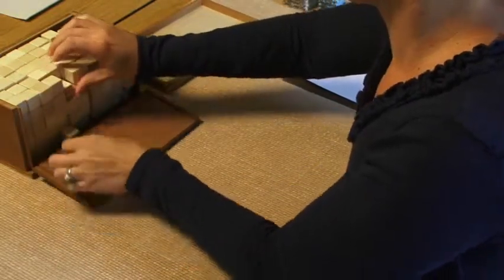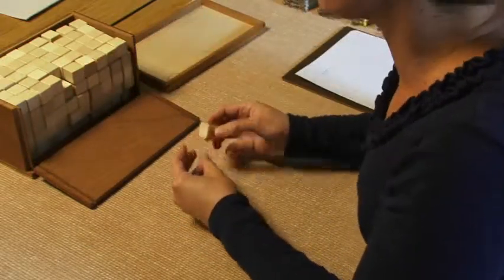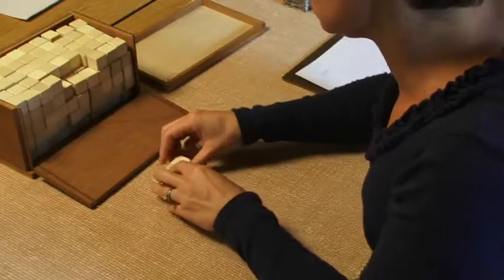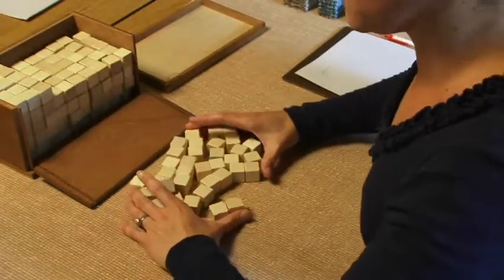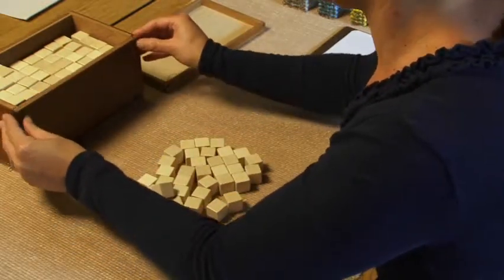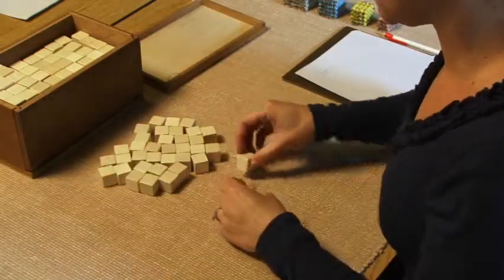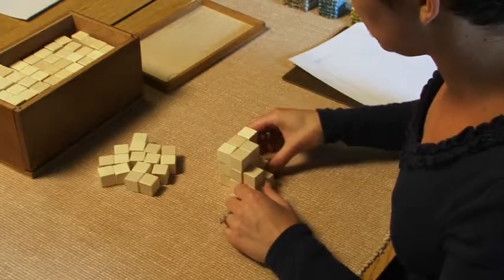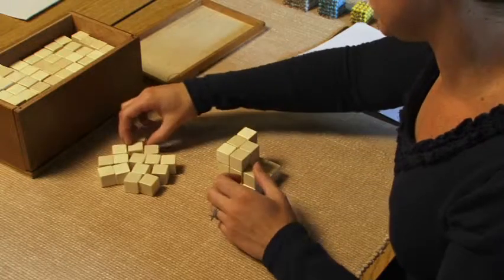And for this first example, we're going to start by finding the cube root of 35. So I'm going to count out 35 of our two centimeter cubes. And because we are finding the cube root, our unit is going to be a cube. So we're going to start building our cube. We're building in three directions. We're building out and up and out, and then filling in.